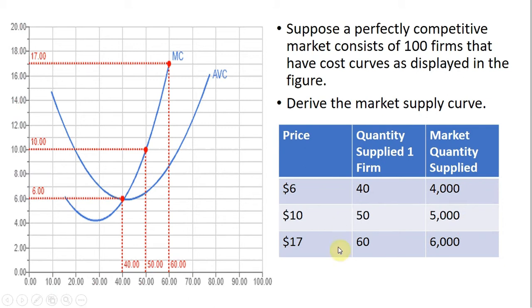And then the same reasoning will be applied for what's happening here at a market price of $17. 100 firms each producing 60 gives us 6,000 units of output being supplied at the market price of $17.